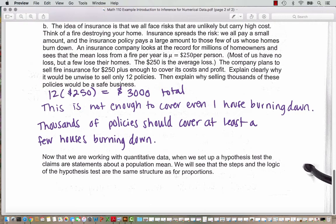Thousands of policies should cover at least a few houses burning down. And we've seen in areas with wildfires or in the 1991 Oakland Hills fire, when you have a lot of fires in one area, if insurance companies haven't sold diverse policies all around the state or all around the country, they can run into financial trouble as insurance companies.